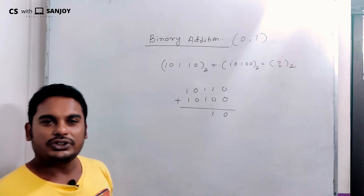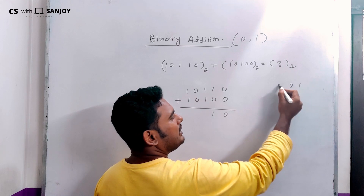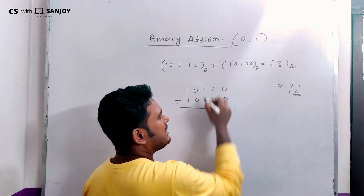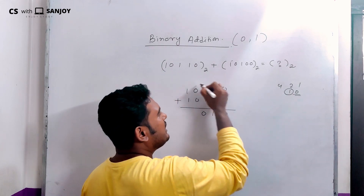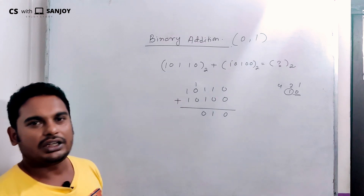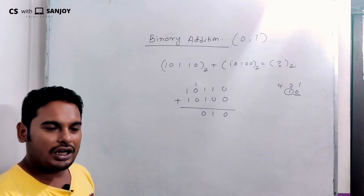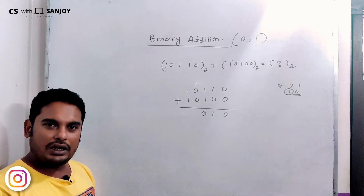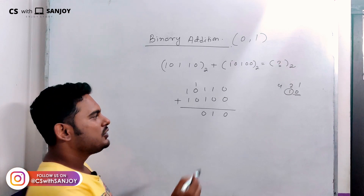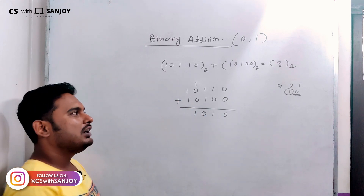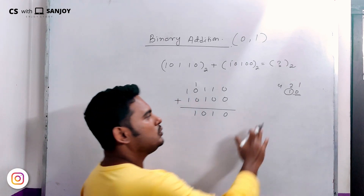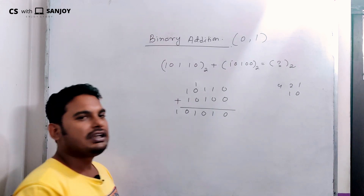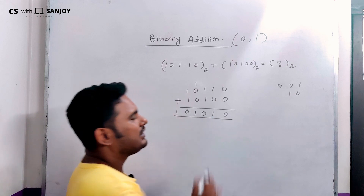Now, 1 plus 1 gives us 2, which we write as 0 with carry 1. The sum is 0 and carry is 1. Again, 1 plus 1 gives 2 — binary 1 0 — so sum 0 and carry 1. This is the result we get.